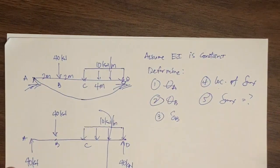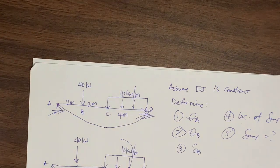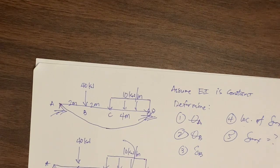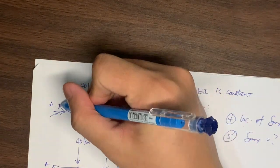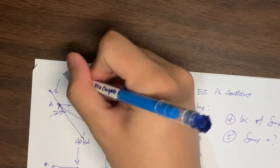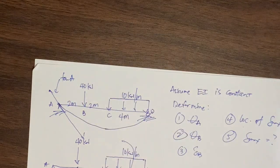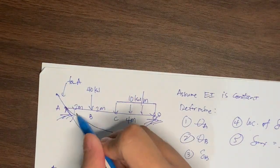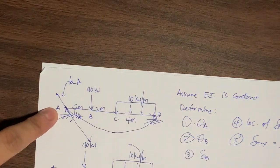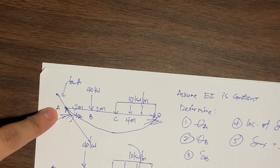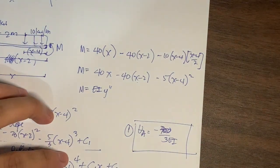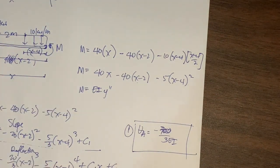We can check this graphically. Drawing the elastic curve, the tangent line at point A moves from the origin downward to the right, indicating a negative slope — consistent with our analytic geometry discussion. This confirms that the slope at A is negative.